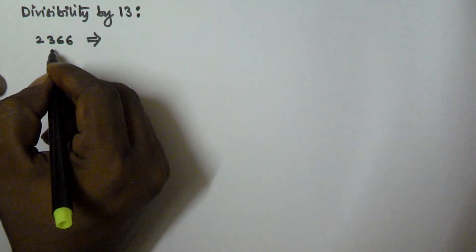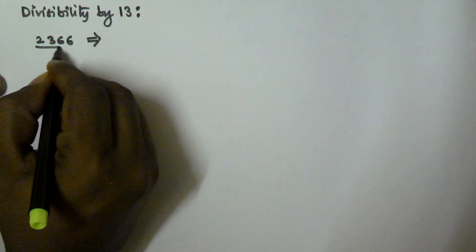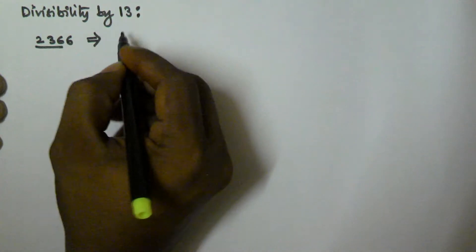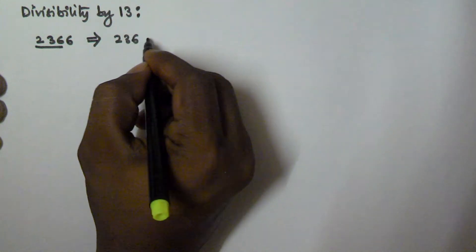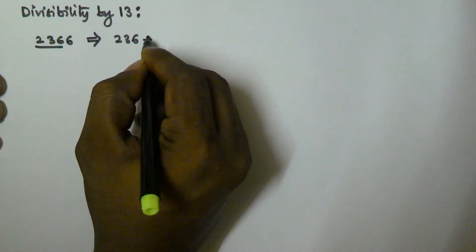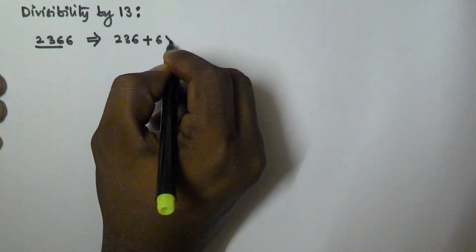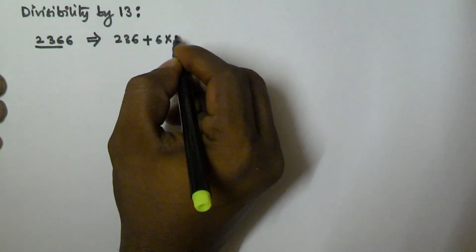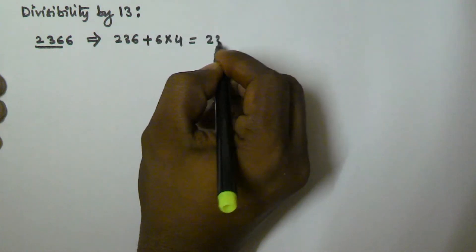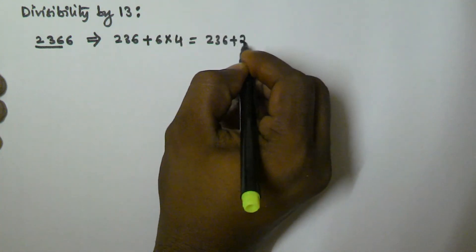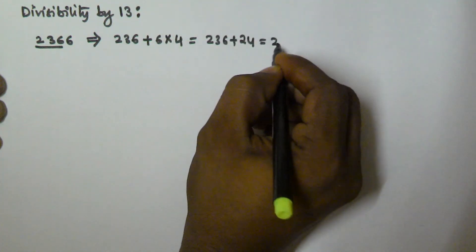We take all the digits except the unit digit — in this case that is 236. Then we add the unit digit multiplied by 4. So we get 236 plus 6 times 4, which equals 236 plus 24, equal to 260.